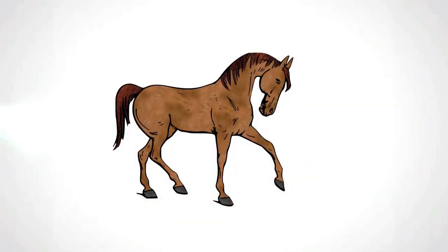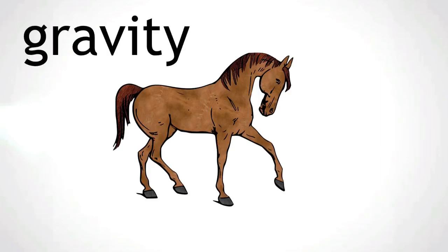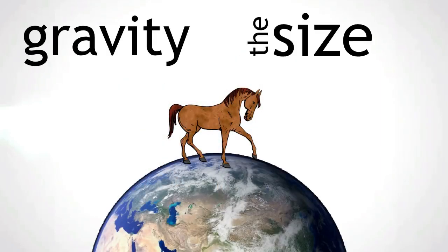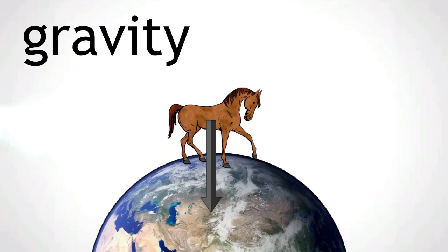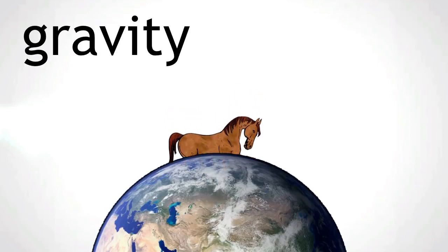The first force we will consider is the force of gravity. This acts towards the centre of the earth. The size of the force of gravity is the horse's weight. An arrow is drawn downwards, from the horse towards the centre of the earth. If this were the only force acting on the horse, it would sink into the ground.